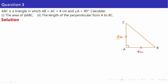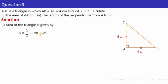Let's find the area of this triangle. If we call AB as the base and AC as the height — since they are perpendicular to each other at angle A — then the area is half into base into height. Base is AB and height is AC. Substituting the values: half into 4 into 4 gives 2 into 4, which is 8 square centimetre.